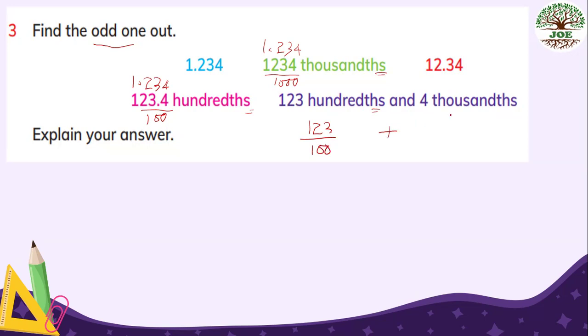1.234 hundredths. And plus four thousandths. This is one thousandth. So this is two places smaller. 1.23 becomes 1.23. Plus this is thousandths. Three places. 0.004. And then 1.234. This is 1.234. 1.234. 1.234. 1.234. And this is the only one that is different from others. This is the odd one.